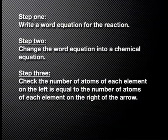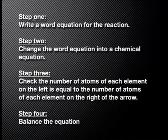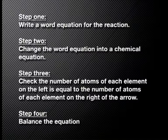Step 3: Check that the number of atoms of each element on the left of the arrow is equal to the number of atoms of each element on the right of the arrow. Step 4: Balance the equation by writing numbers in front of the formula. We will be writing balanced equations throughout this series.